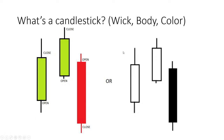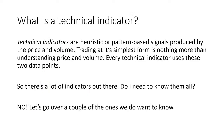Hopefully we have a basic understanding of what a candlestick is. So what is a technical indicator? Well, this is from Wikipedia directly: technical indicators are heuristic or pattern-based signals produced by price and volume. Trading at its simplest form is nothing more than understanding price and volume, because those are the only true data points out there to be measured. Everything else is simply measuring those two data points — price and volume. Every indicator out there uses those and those only.